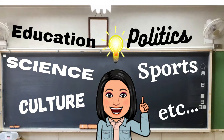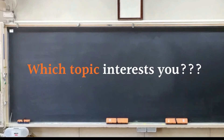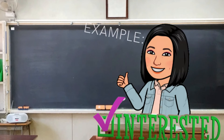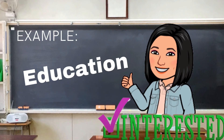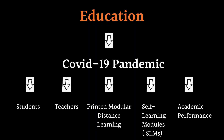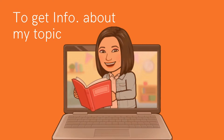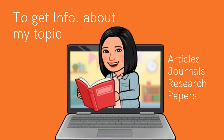Then, choose the one that interests you. In my case, I select education. Then, from this, narrow this down. For example, I will break education down into subtopics. The subtopics that I may have are: students, teachers, printed modular distance learning, self-learning modules or SLMs, and academic performance. Afterwards, I will read different articles like write-ups and previous studies related to my subtopics.